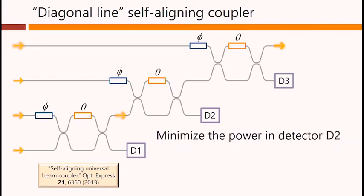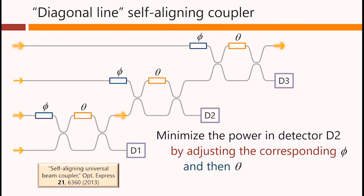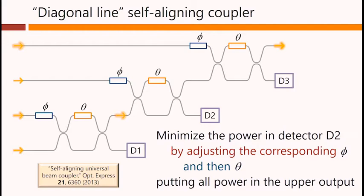Then, we minimize the power in detector D2, that's this one here, by adjusting the corresponding phi, and the corresponding theta. Again, to put all the power in the upper output now of this Mach-Zehnder. Which also changes the power at the top right.